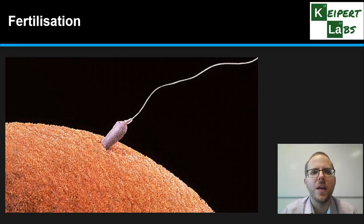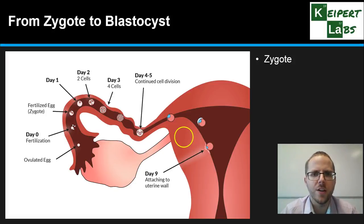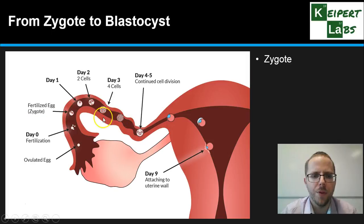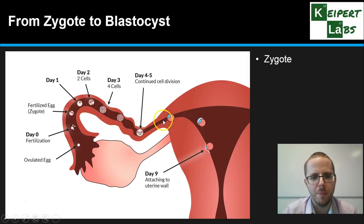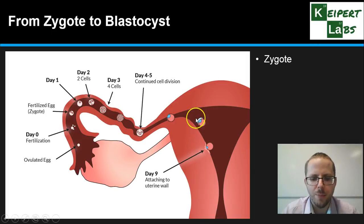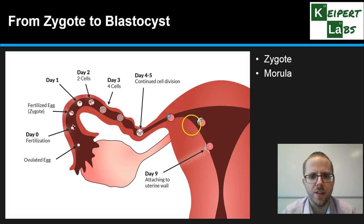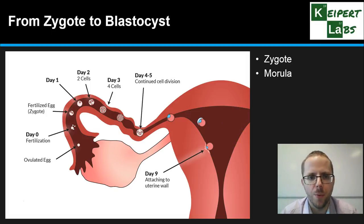Once the egg is fertilised, we begin the process of the new organism forming and developing. When the egg and sperm fuse together, we form a zygote — a fertilised egg. Over the course of a few days that cell starts to divide: two, then four cells, and cell division continues as the egg gradually makes its way into the uterus. By the time it's entering the uterus, it has formed a clump of about 80 cells called a morula — a small bundle of identical cells.